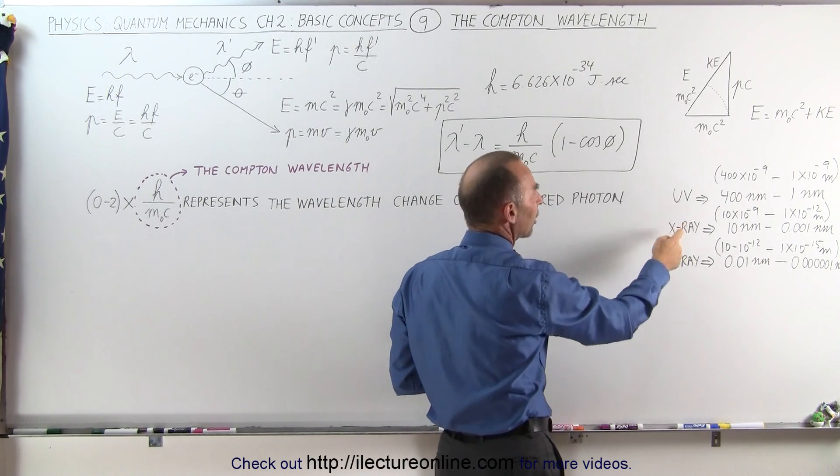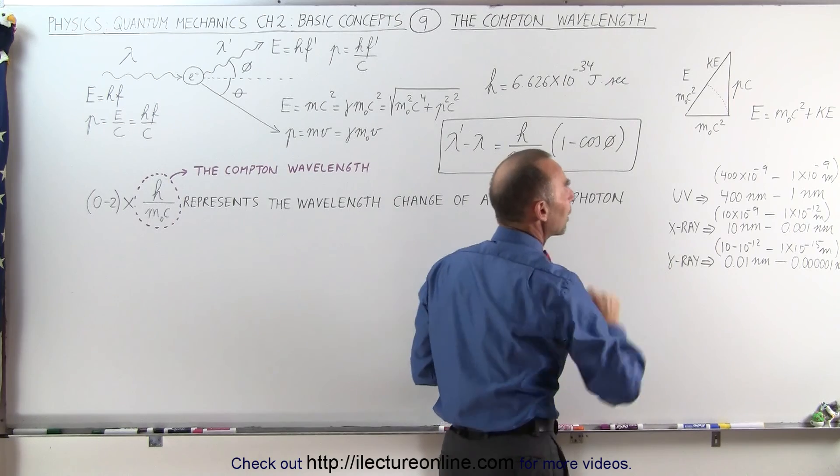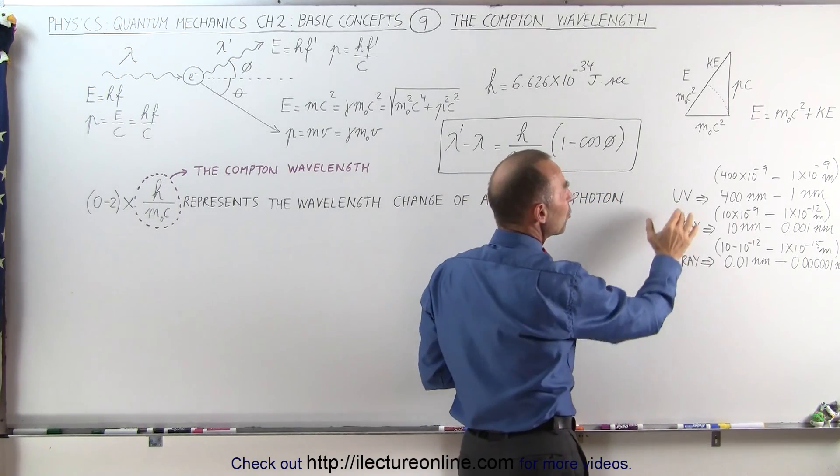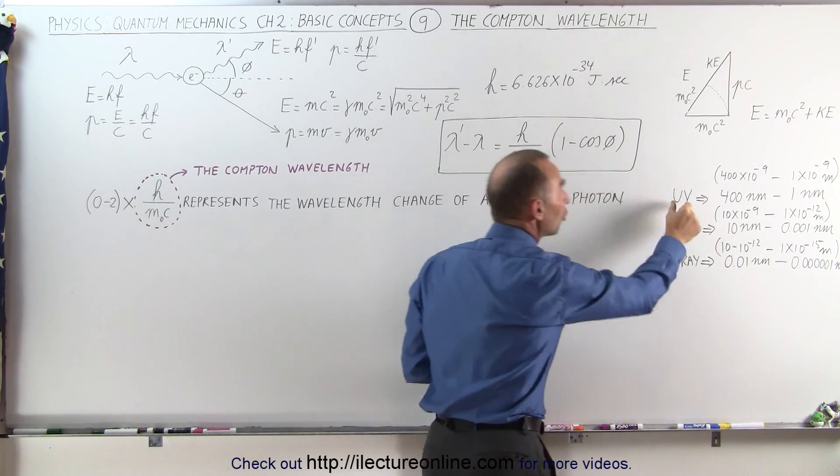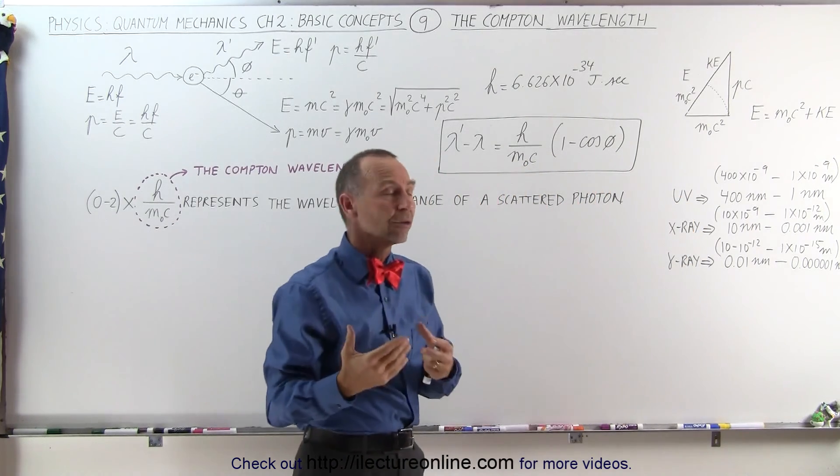And then you have to keep in mind that the photon, we typically are talking about a UV photon, an X-ray photon or a gamma ray photon. And if the wavelengths of the photons are too large, a very tiny change may not be noticeable or measurable on those wavelengths.